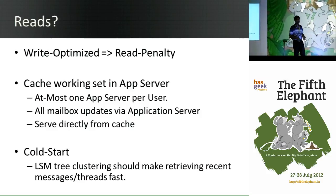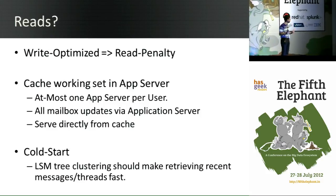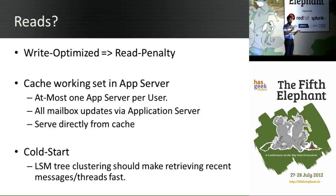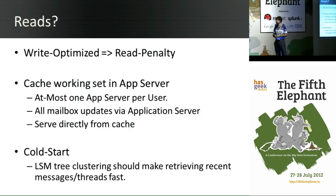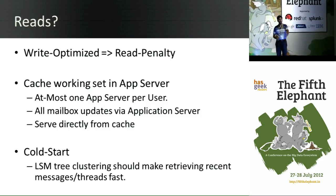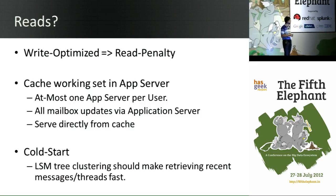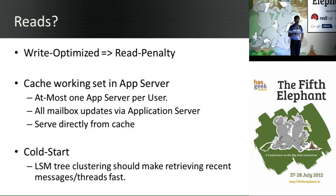Once you start doing caching, you have cache coherency issues. To keep things simple, the approach was to have users bound to app servers — so all updates and reads to the mailbox go through one app server that holds a nice in-memory cache, with no cache coherency issues. The only problem to solve is: given a user, which app server is the user hosted on? The actual solution, done after I left, was a user discovery service written in Zookeeper, which maintains this mapping.